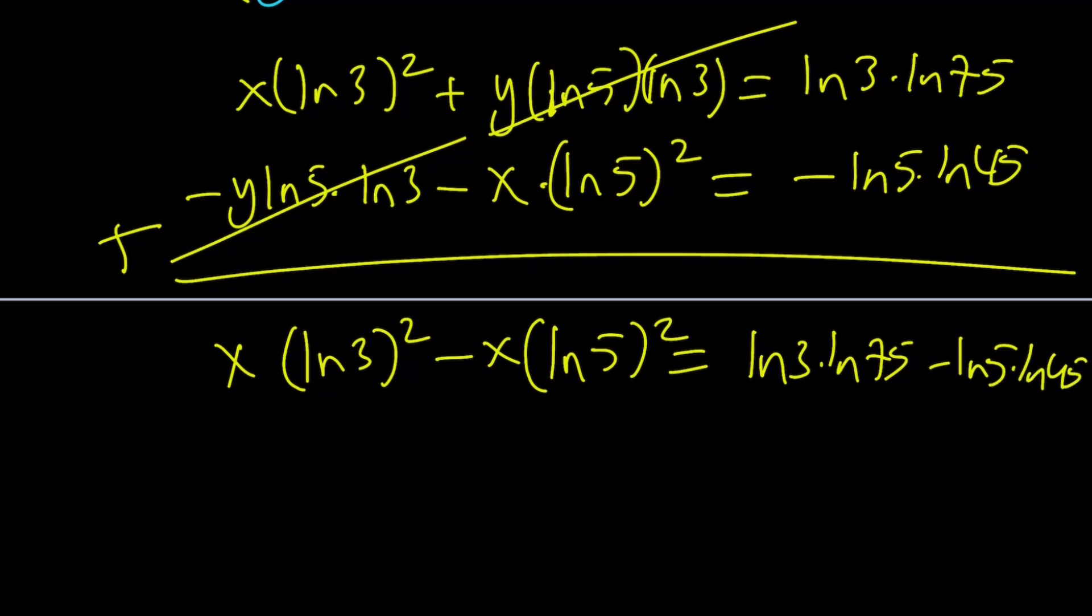And then from here, you can basically take out an x and ln 3 squared minus ln 5 squared. By the way, notice that that is a difference of 2 squared, so I'm hoping to get something similar from the right-hand side.